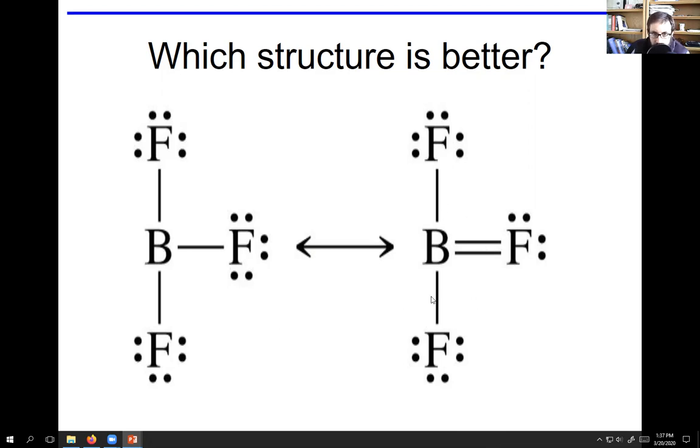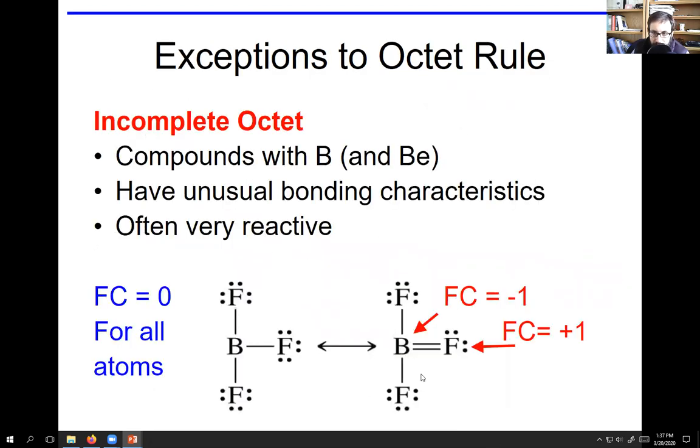Now look at the structure at the right. Boron has two, four, six, eight. Good for boron. And this fluorine does two, four, six, eight. So the one on the right looks correct. But in reality, this is the better Lewis structure, the one on the left. So why is that?